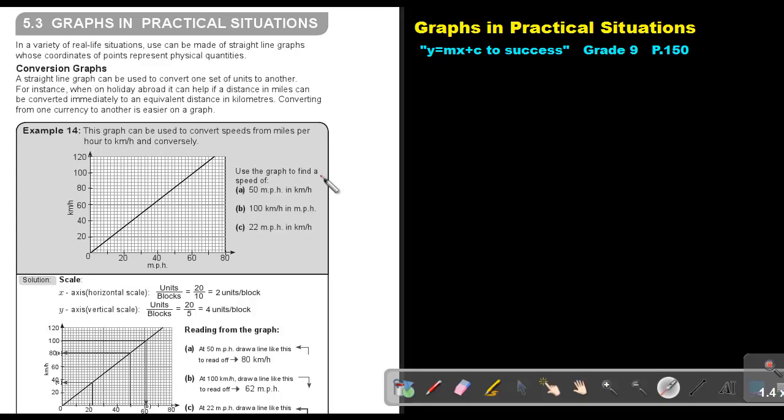Use the graph to find a speed of 50 miles per hour in kilometers per hour. Go to the miles per hour axis. Just take your ruler, go to 50. It's between 40 and 60, exactly in the middle. Draw it up, and as soon as it touched that graph, draw it to this side. Let me just show you, let's redo it. You will see it's going to be exactly 80 kilometers per hour.